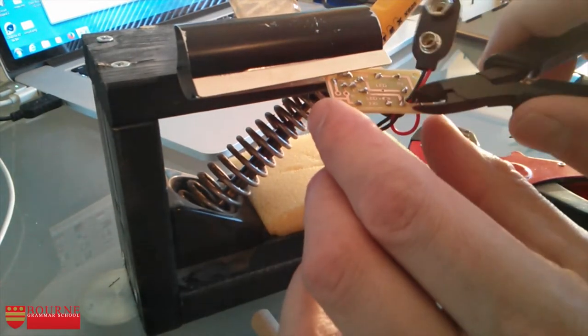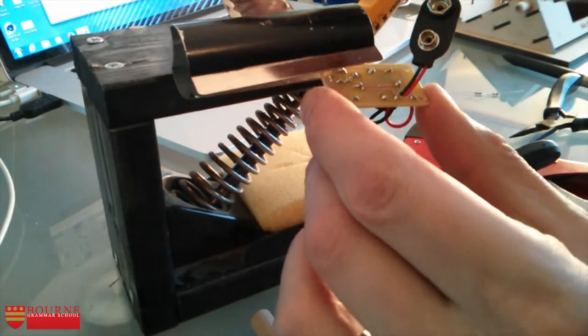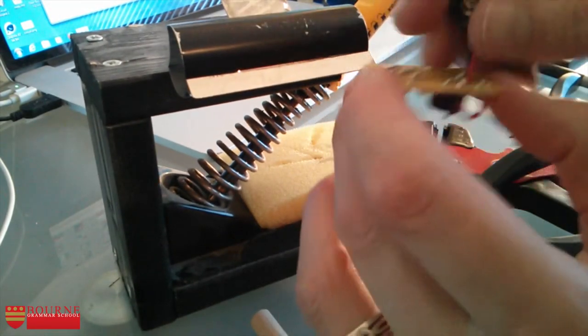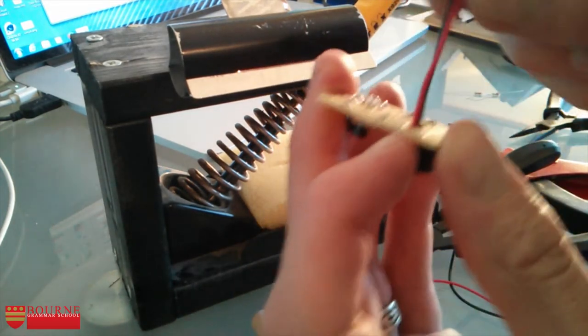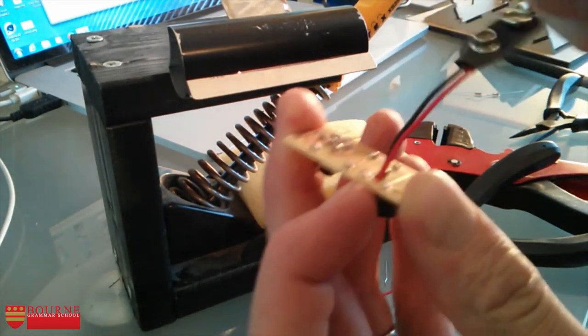Now you can see that because of that strain hole, I can pull on this and those wires aren't going to be ripped out of the joints. And that's the snap on.